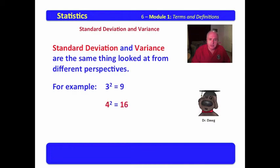9 could be the variance, which is the square of the standard deviation. 4 squared equals 16 - again, 4 would represent the standard deviation, 16 the variance. 5 squared equals 25 - 5 would represent the standard deviation, and 25 the variance. We're going to begin our journey once we have these terms down.